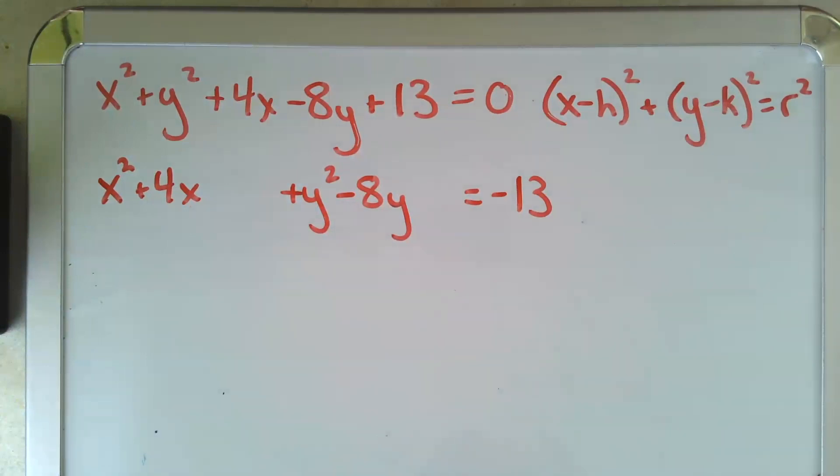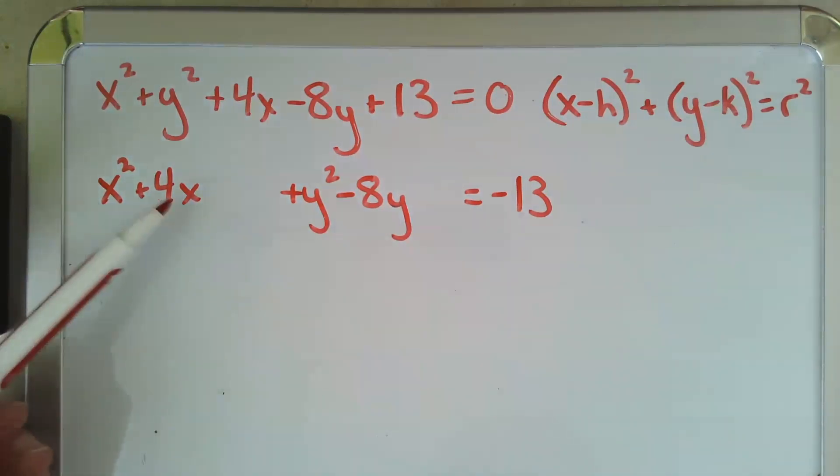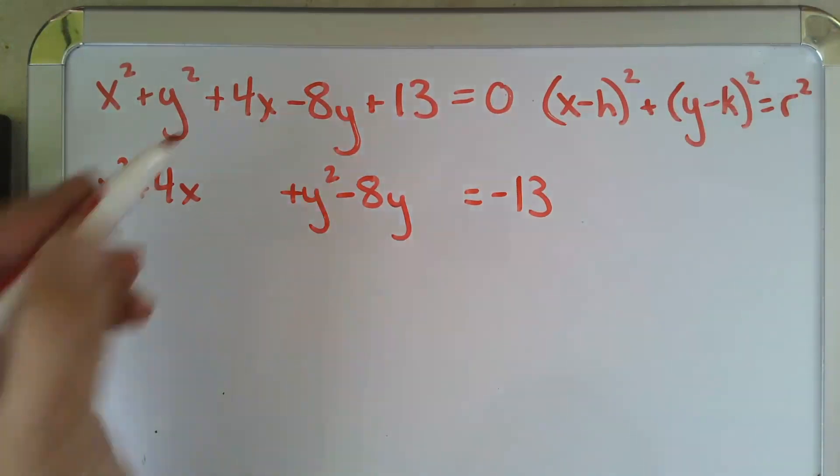But if you do remember how to complete the square, then you know we take this coefficient 4, divide it in half, and square it. 4 divided by 2 is 2, squared is 4.